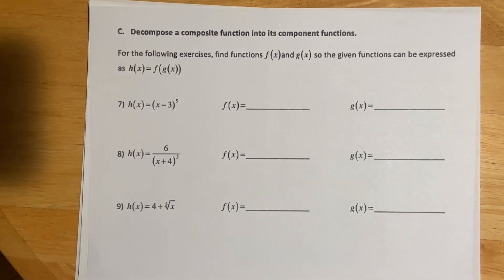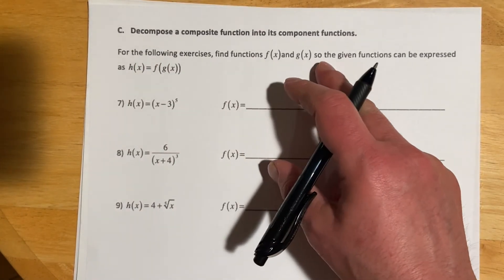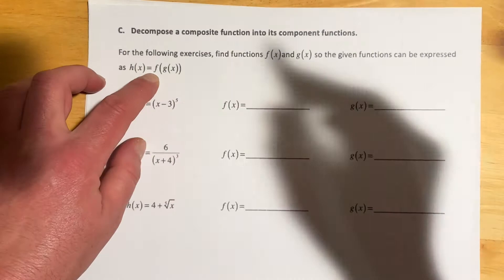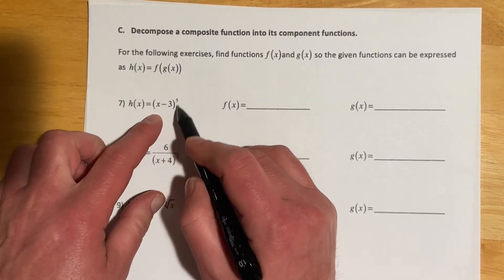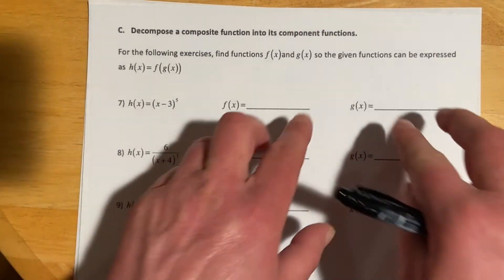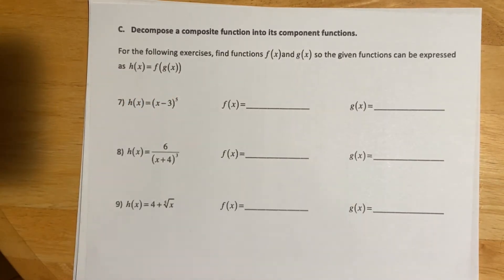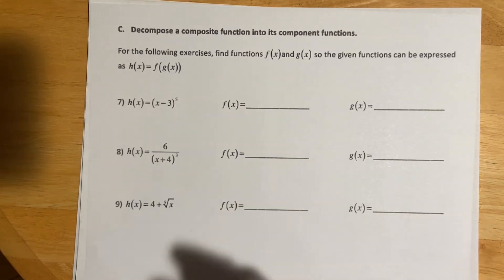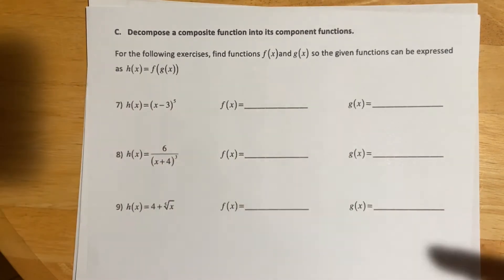For this next round of problems, we're asked to decompose a composite function into its component functions. Given the composite, we find functions f and g such that h equals f composite g. You might wonder why we'd do this — the answer is calculus 1, where you do this a lot. This is a way of seeing the composite function when it's already put together.